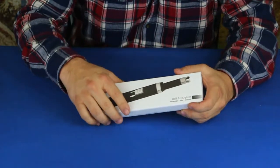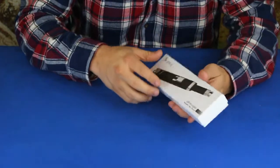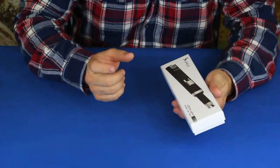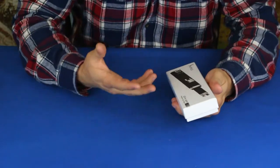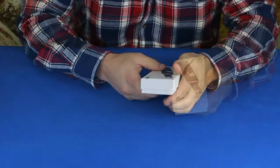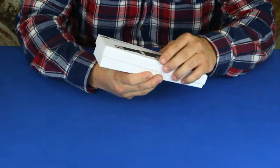Now an arc lighter, if you don't know what that is, is actually one that uses a plasma stream, which is basically kind of like a little lightning bolt and you use that to light things up. Let's go ahead and open it up and take a look at what's inside here.